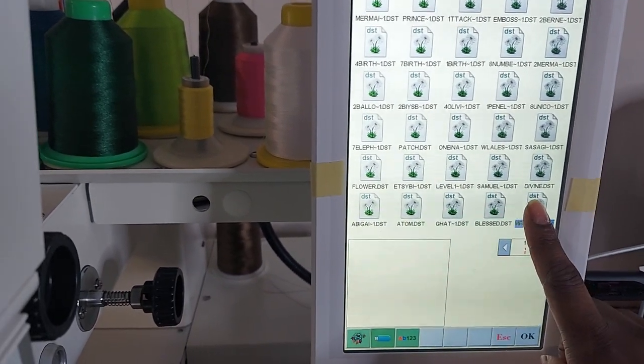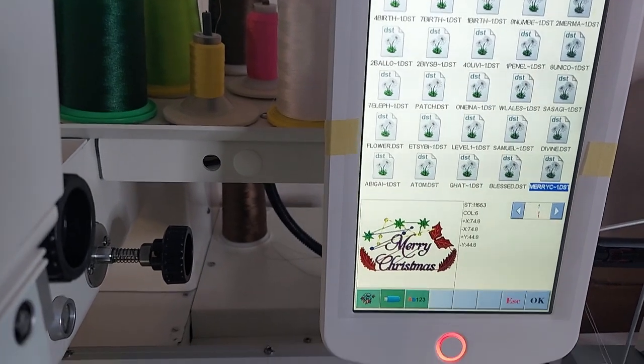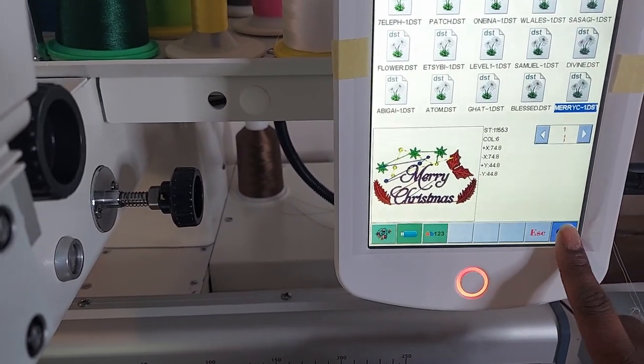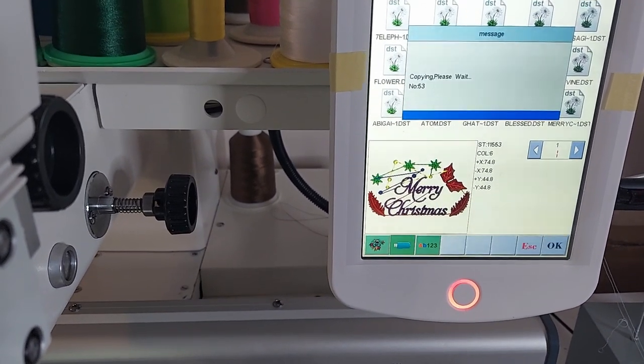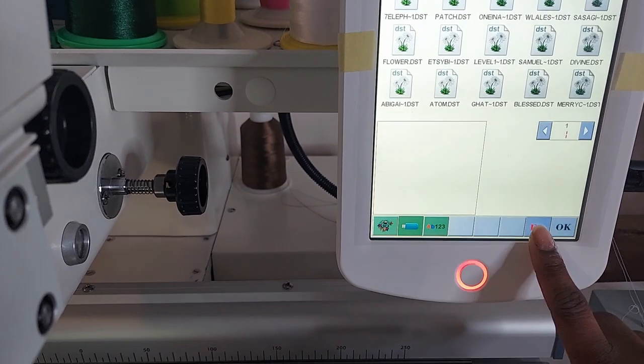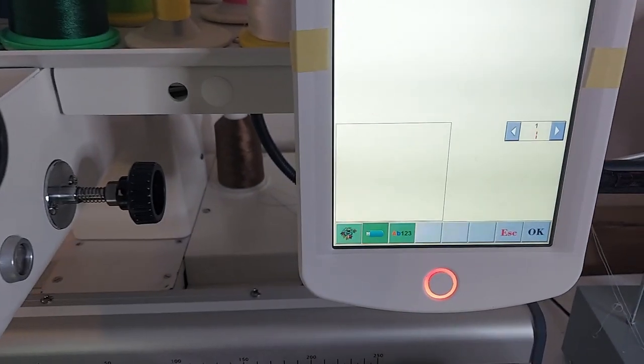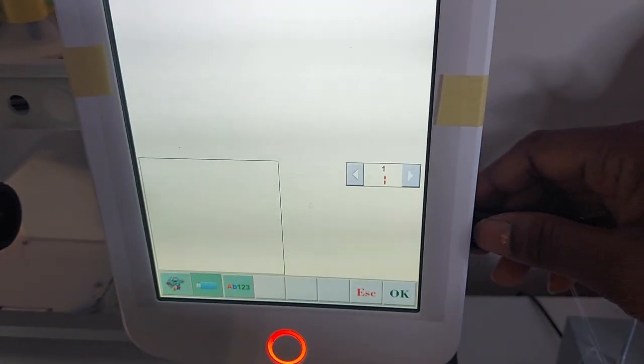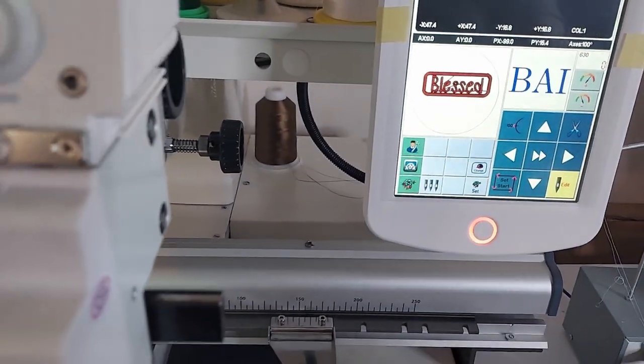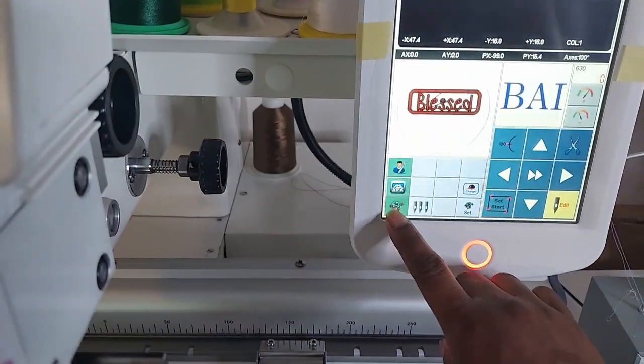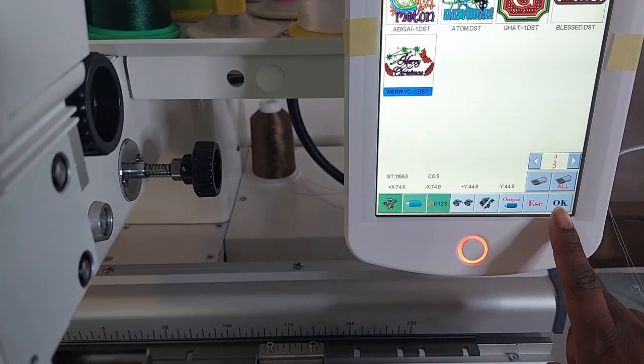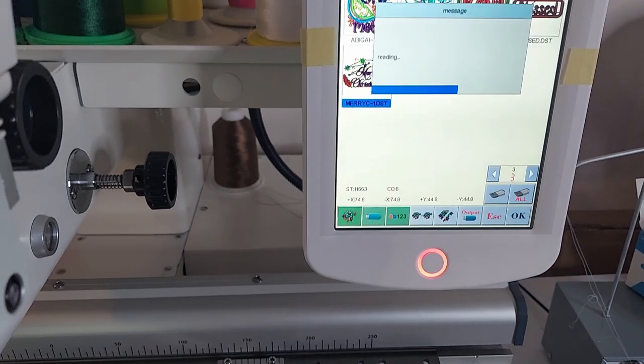Find the design and click on it to download it to the machine. When you're done, press OK and take your flash drive out of your machine. Now that your design has been copied to the embroidery machine, click on the flower icon to find your design, then click on it to open.